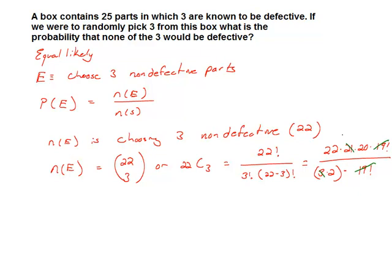Well I know 3 goes into 21 seven times and then we can divide 2 into 20. So we have that the number of ways that E can occur is going to be 22 times 7 times 10.